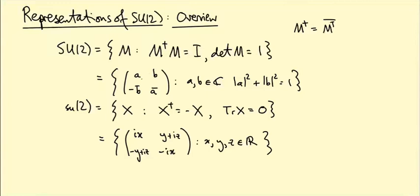There's a simpler way of writing these matrices since they're 2×2. The matrices take the form: (A, B; -B̄, Ā), where A and B are complex numbers, and |A|² + |B|² = 1.